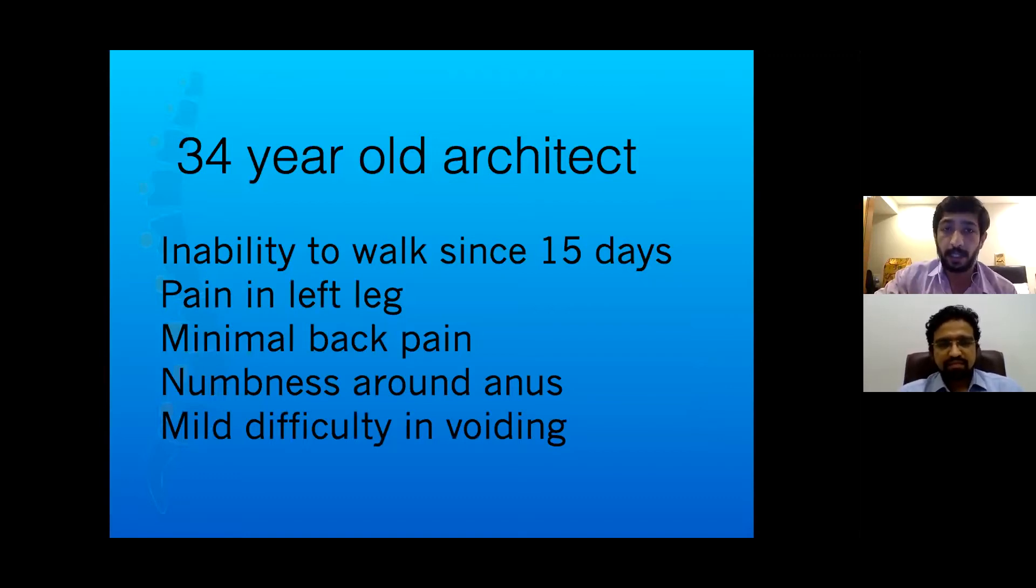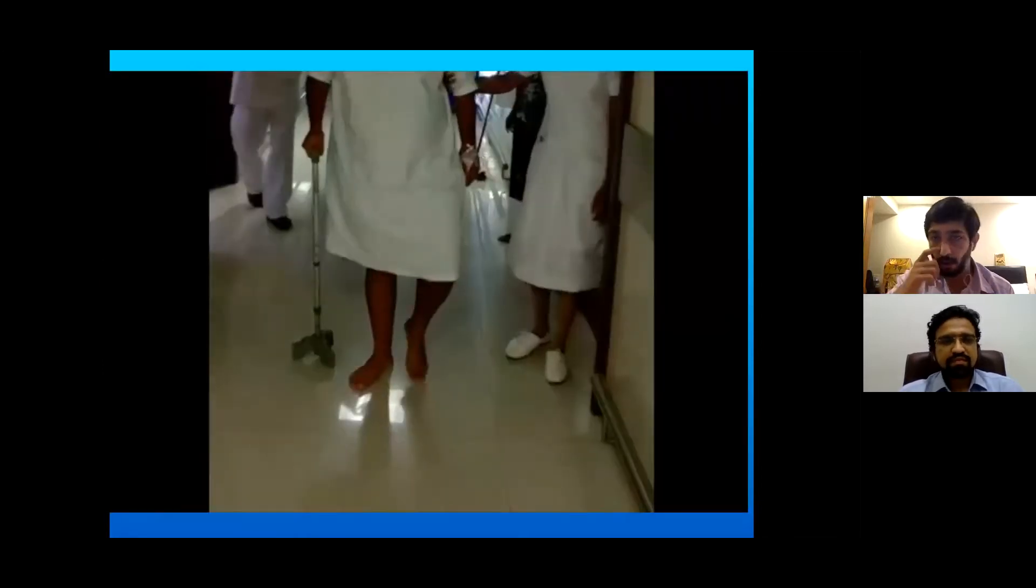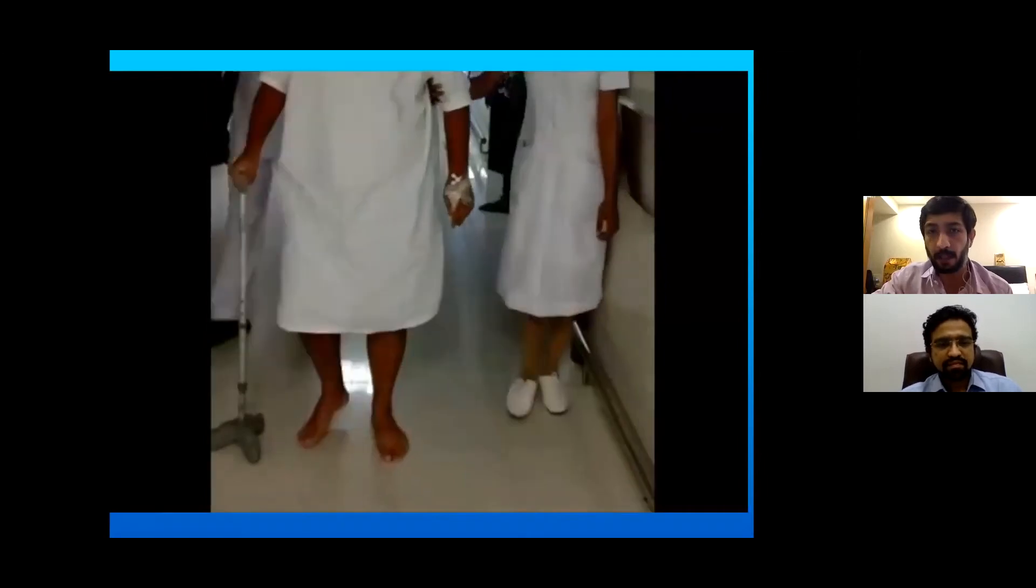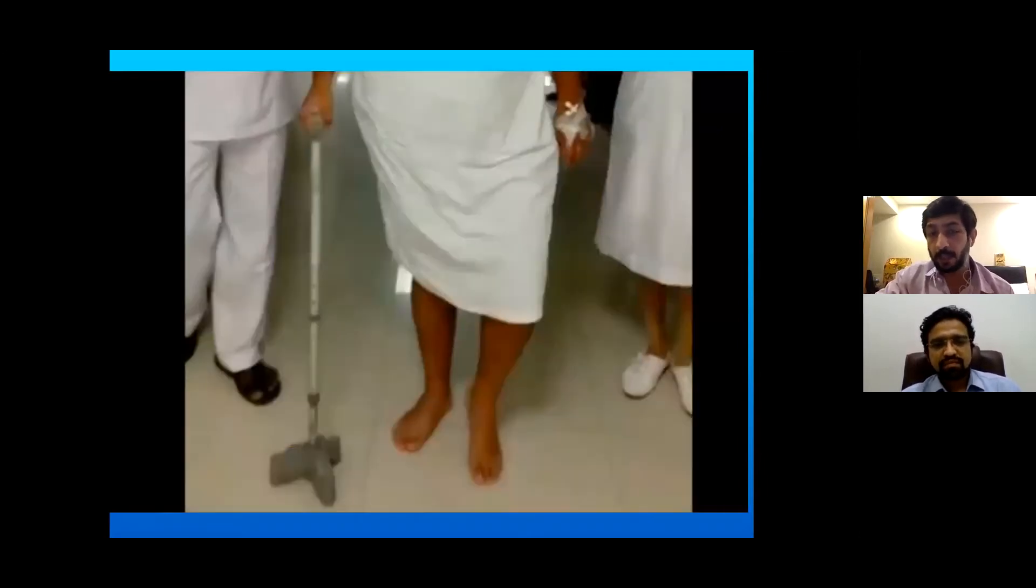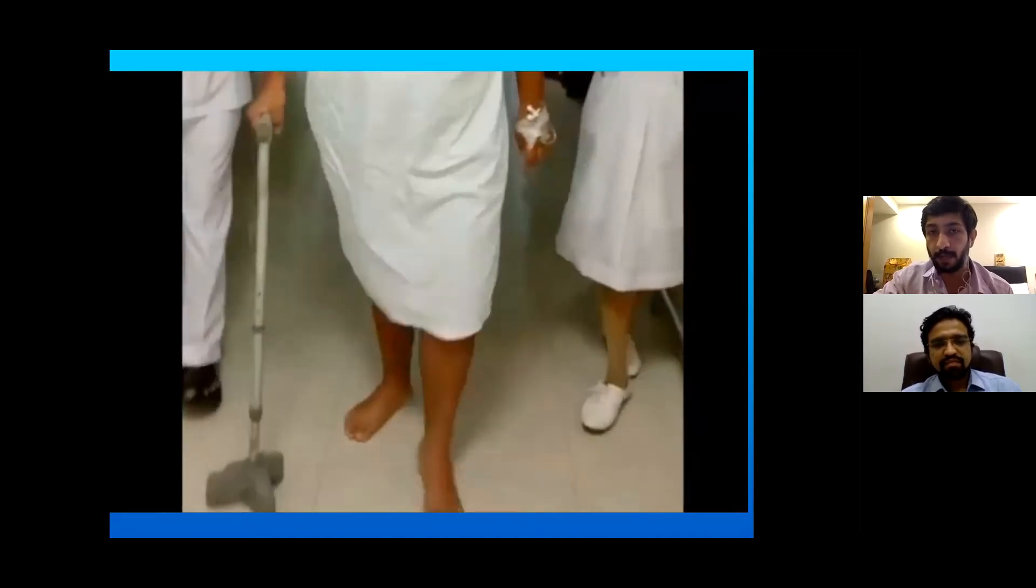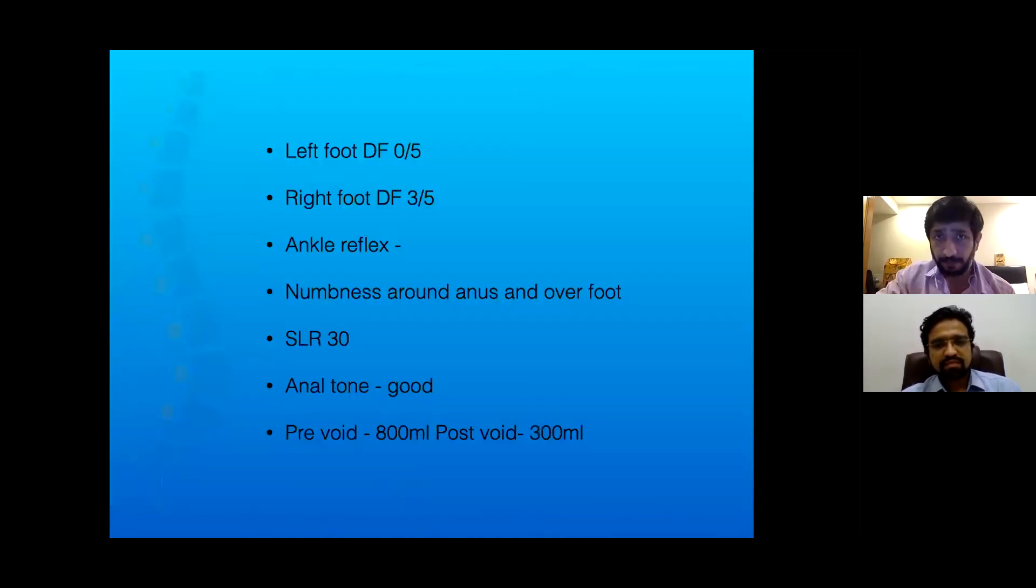He did complain of numbness around his anus and mild difficulty in voiding. So when I first saw him in the hospital, he was walking like this and it's typical of a high stepping gait. And the minute you see this, you know that this patient has a foot drop. On examination, the left dorsiflexion was completely zero, right side was 3 out of 5, ankle reflexes were absent.